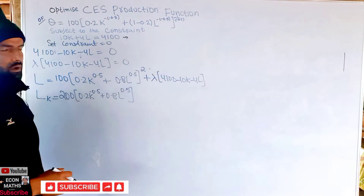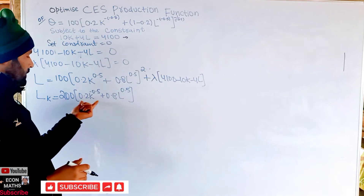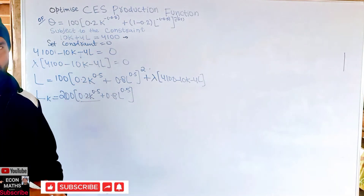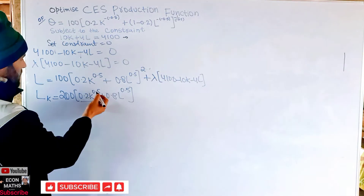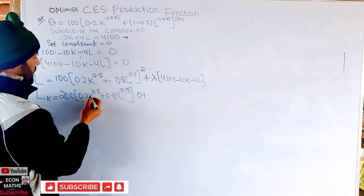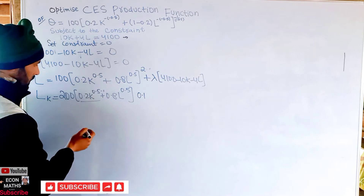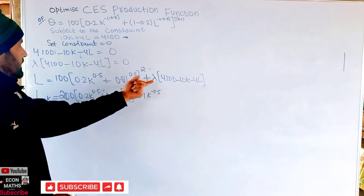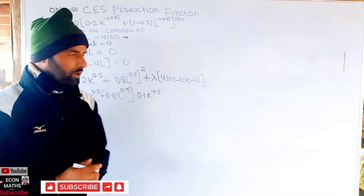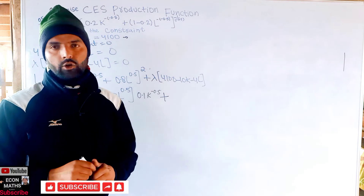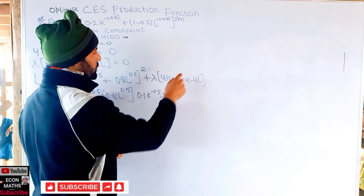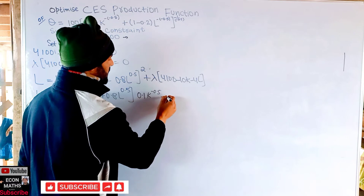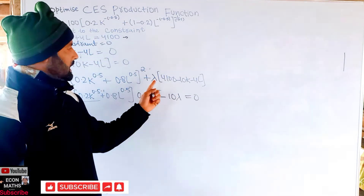Then we internally differentiate with respect to K: 0.5 × 0.2 = 0.1, and the exponent becomes minus 0.5, giving 0.1 K^(−0.5). For the lambda term, differentiating 4100 gives 0, and differentiating −10K gives −10, so we have −10λ. Setting this all equal to zero.